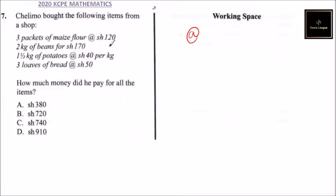Two kg of beans for 170 shillings—that means the two kg cost 170, you don't multiply by two. One and a half kg of potatoes at 40 shillings per kg, so there you multiply 40 times one and a half to get the total cost of potatoes.